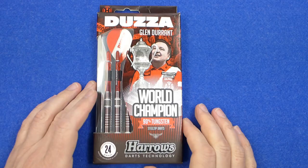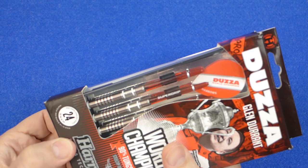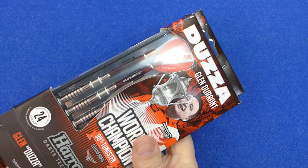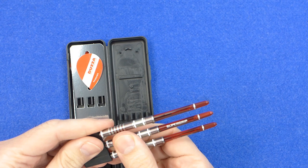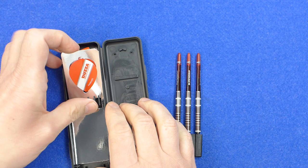The darts come in a slimline package with a picture of Glen Durrant and the world championship trophy on the front. Inside you've got a hard plastic case and the darts are fitted into a point protector. You've got a set of the super grip stems, they look to be medium, and you've got the Glen Durrant pear shaped flights.